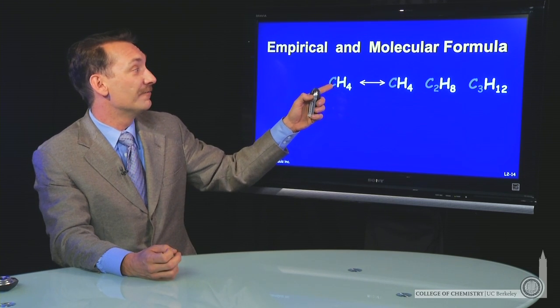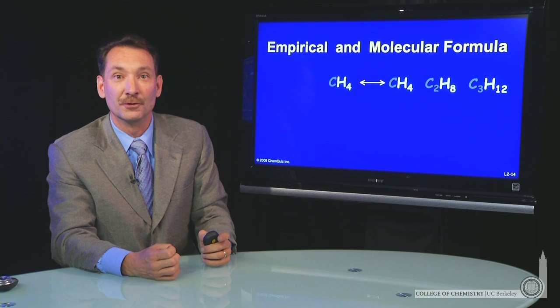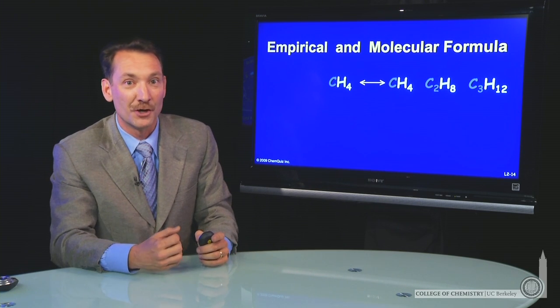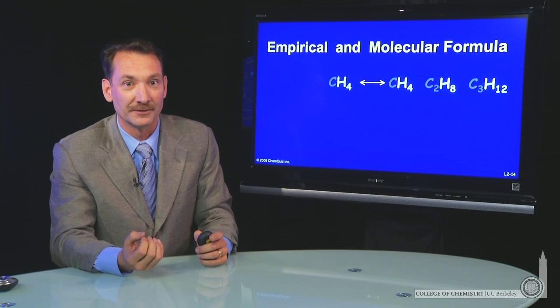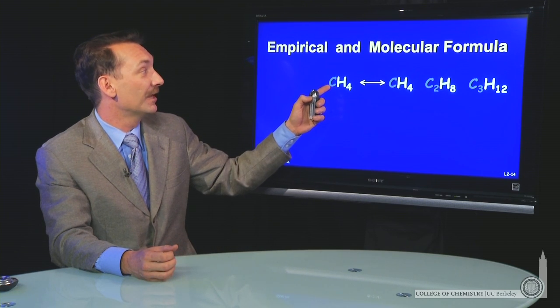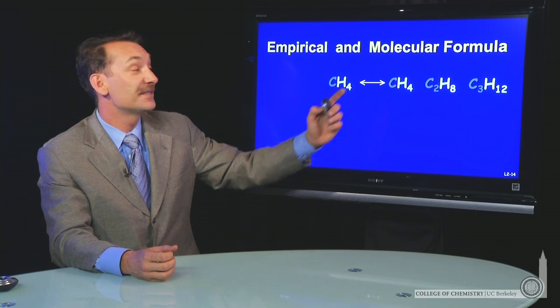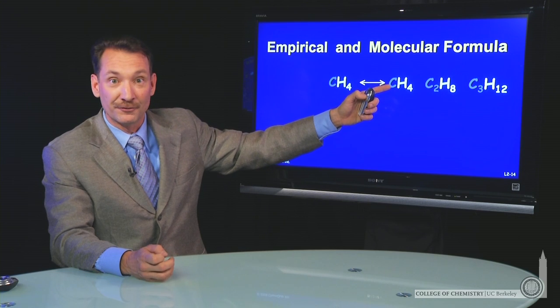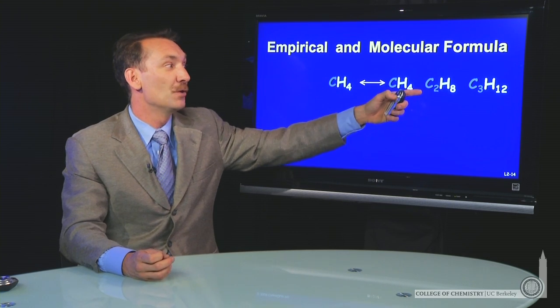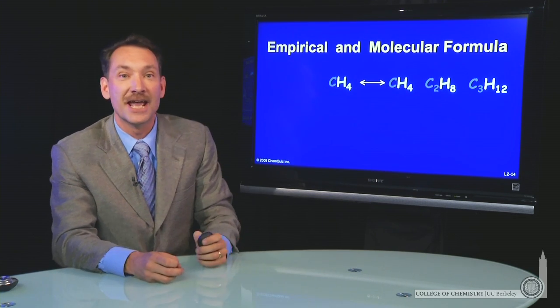We talk about the ratio of atoms in a molecule. The simplest possible ratio is the empirical formula. So the empirical formula CH4 has many possible molecular formulas: CH4, C2H8, and C3H12.